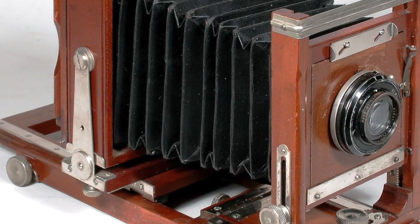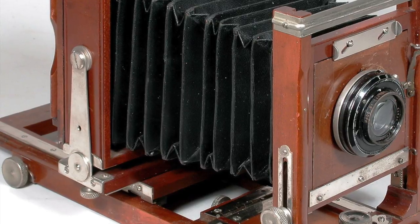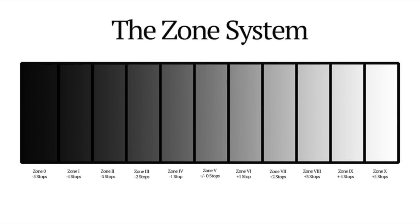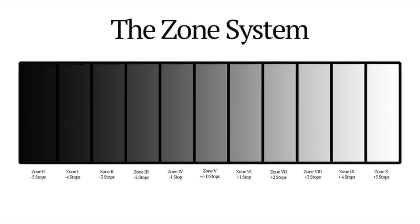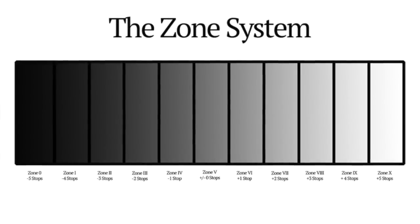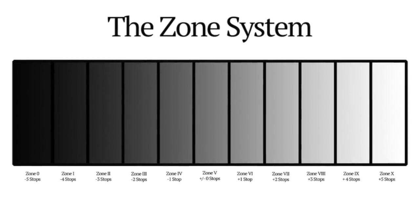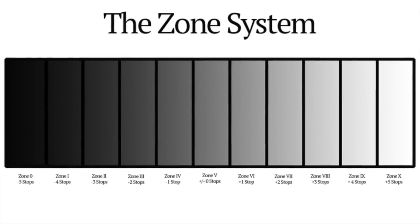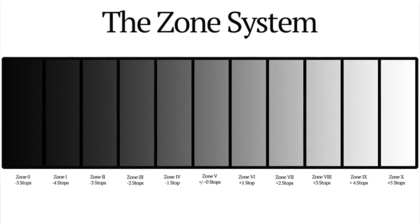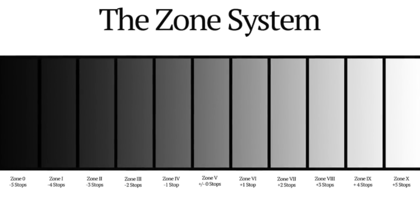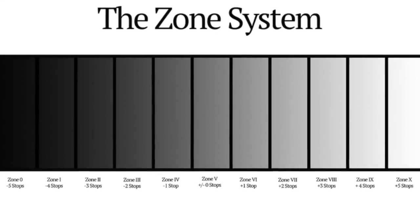The visualization method Adams utilized in photographing Monolith: The Face of the Half Dome, led to the creation of the Zone System. The Zone System was developed by Adams and fellow photographer Fred Archer at the Art Center School in Los Angeles in 1939 and 1940.